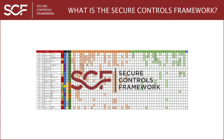The structure of the SCF normalizes disparate control language into something that is usable across technology, cybersecurity, privacy, and other departments where they can share the same control language. The SCF enables not only intra-organization standardization, but inter-organization standardization, where a control identifier means the same thing to one organization as it does to any other organization using the SCF.